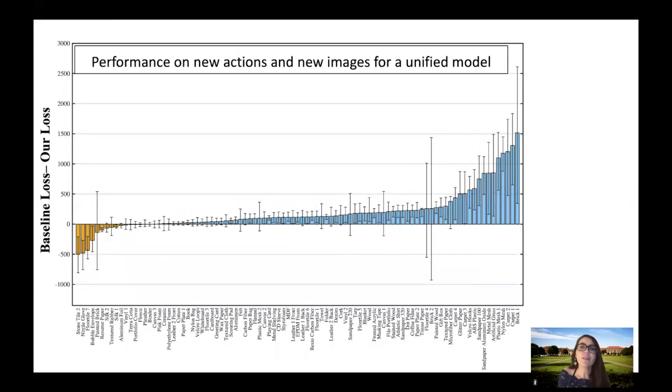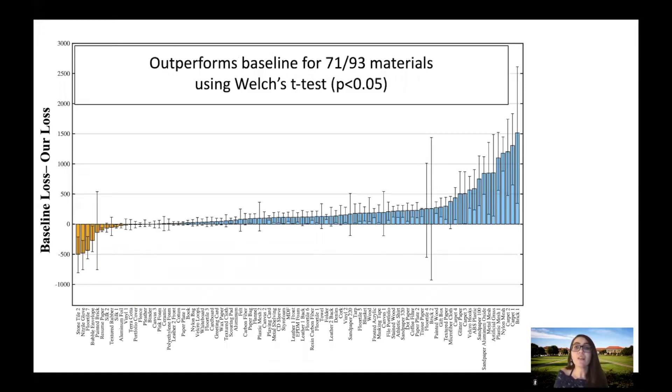Lastly, we showed the performance of our trained unified model on generalizing to new gel site images of the materials in the training set, as well as new actions. Our model significantly outperforms the baseline on 71 materials.